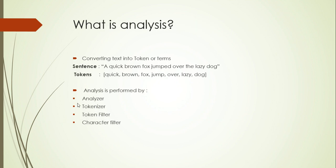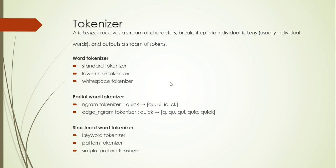In the analysis section we have the analyzer and tokenizer. The tokenizer basically receives a stream of characters and breaks it up into individual tokens. In tokenizer we have three types: word tokenizer, partial word tokenizer, and structured word tokenizer. Word tokenizer means you are breaking the sentence into tokens of words — wherever it finds a new word it will break it there.